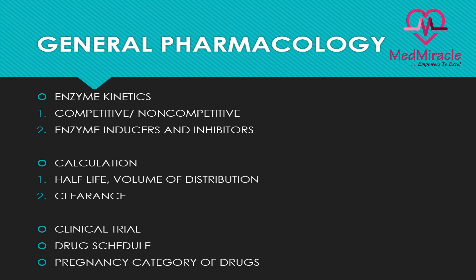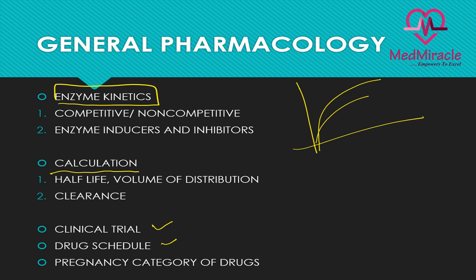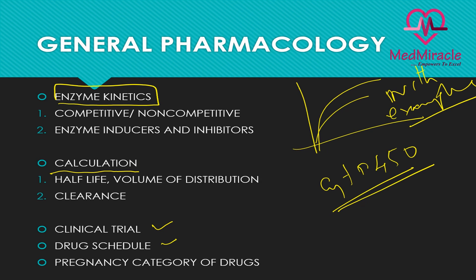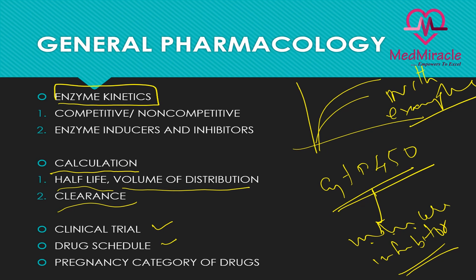Now coming to general pharmacology, the important topics are enzyme kinetics — some calculations are there — and topics like clinical trials and drug schedules. In enzyme kinetics there are a lot of charts: competitive inhibition, non-competitive inhibition, effect of inducers and inhibitors, so you have to be thorough with examples. There is also the cytochrome P450 system and you have to know the inducers and inhibitors of this enzyme. A lot of calculations appear for the AIIMS paper, mainly from clearance, half-life, volume of distribution, and drip rates — be thorough with the formulas.